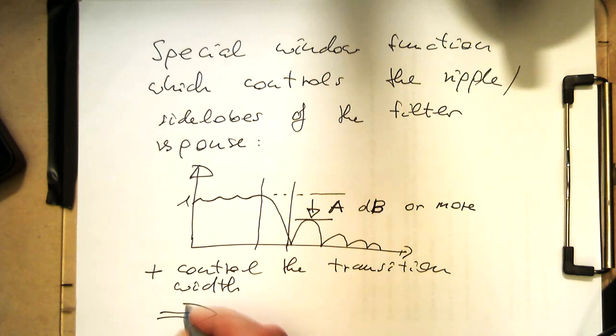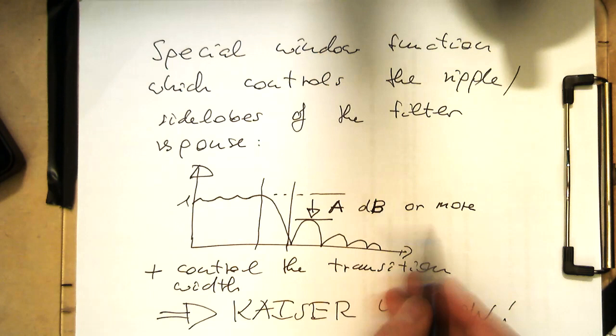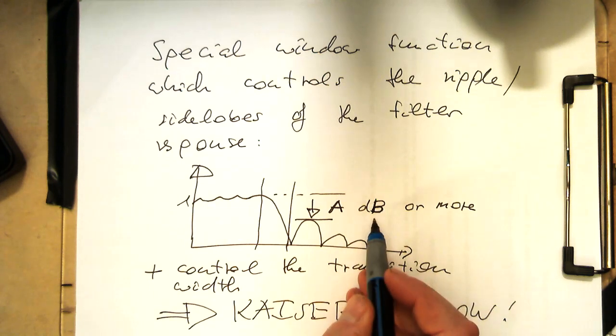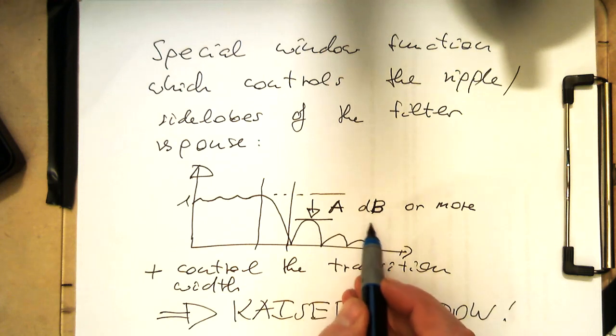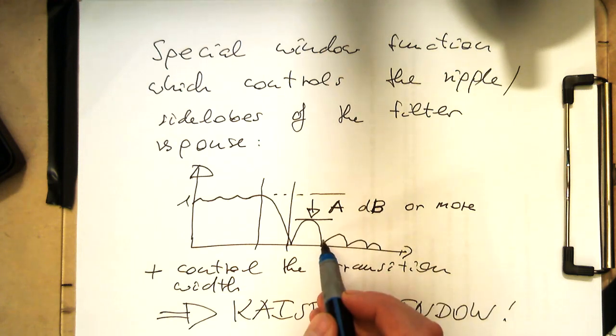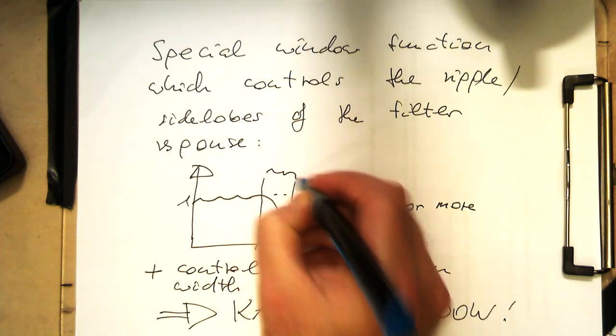This can be done by the so-called Kaiser window. With that we can define that we would like to have a certain guarantee that this bump here is at least a certain amount of decibel below that, and that we have a certain transition width here.